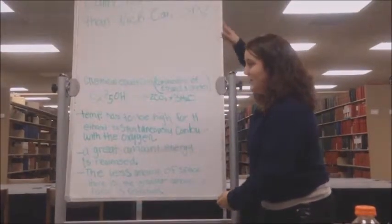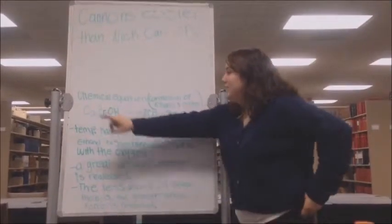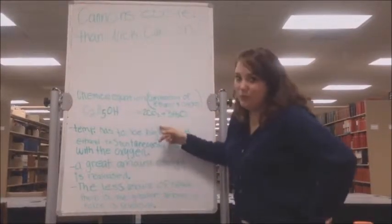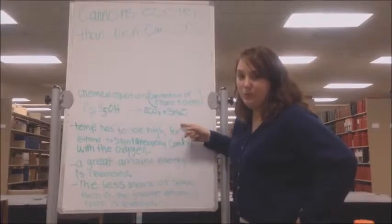So, our chemical equation for the combustion of ethanol and oxygen is C2OH5OH and that turns into 2CO2 plus 3H2O.